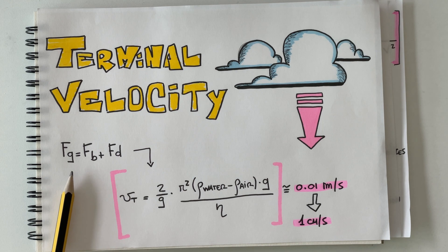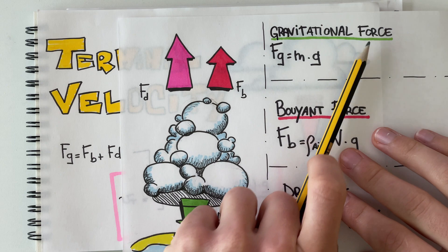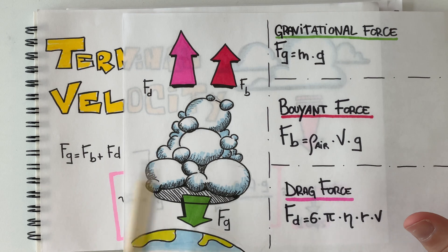So as I said, we put everything together in a way that we're gonna have the gravitational force equal to the sum of buoyant force and drag force.